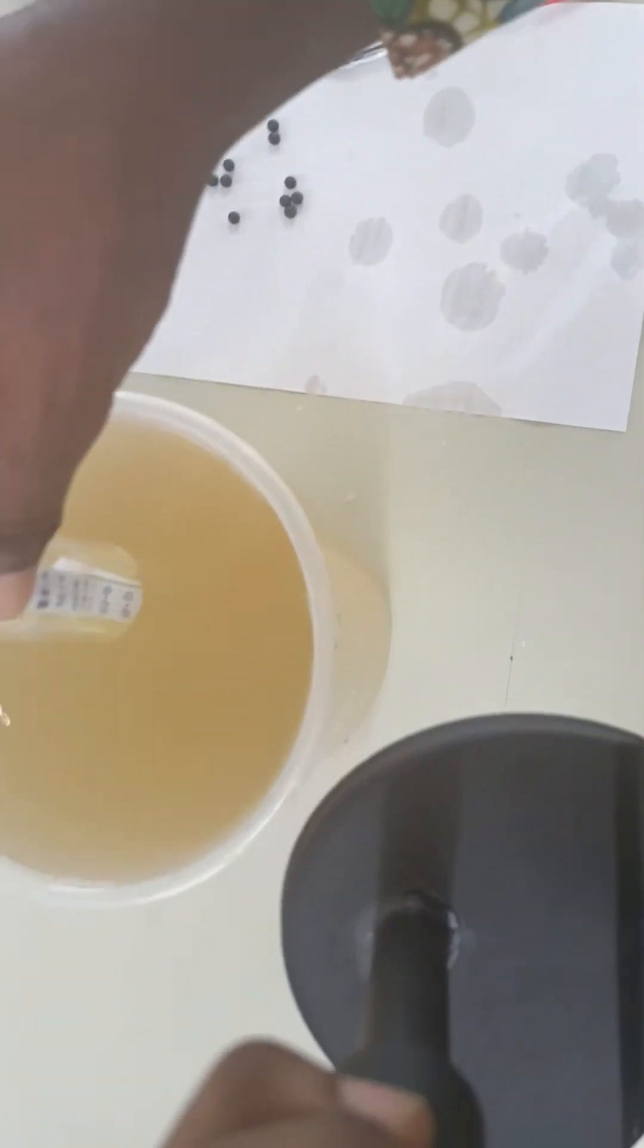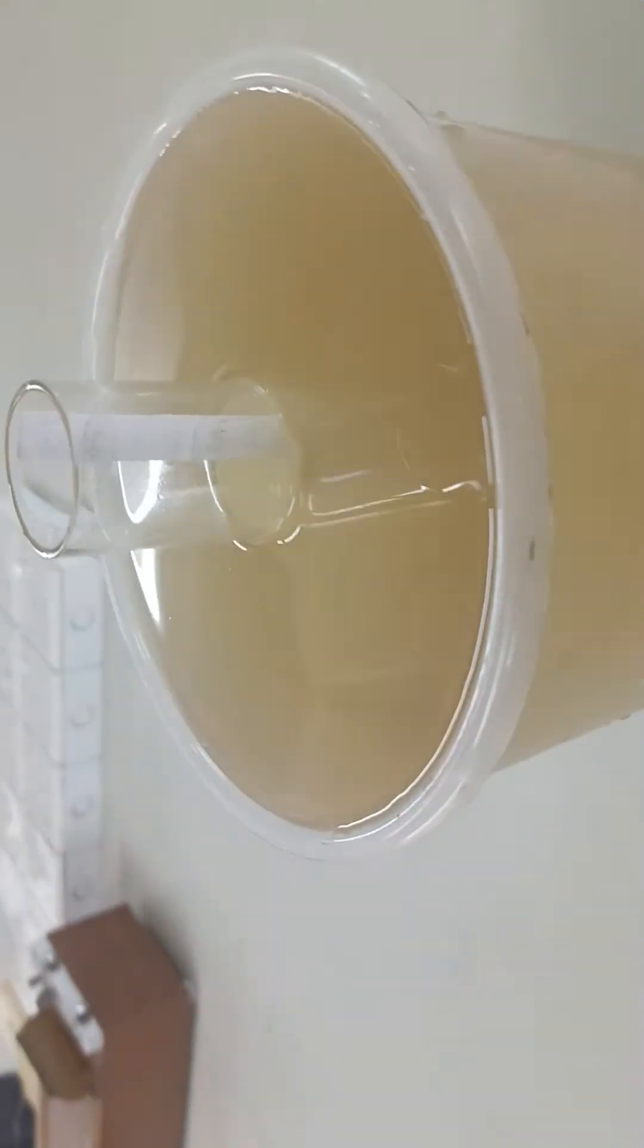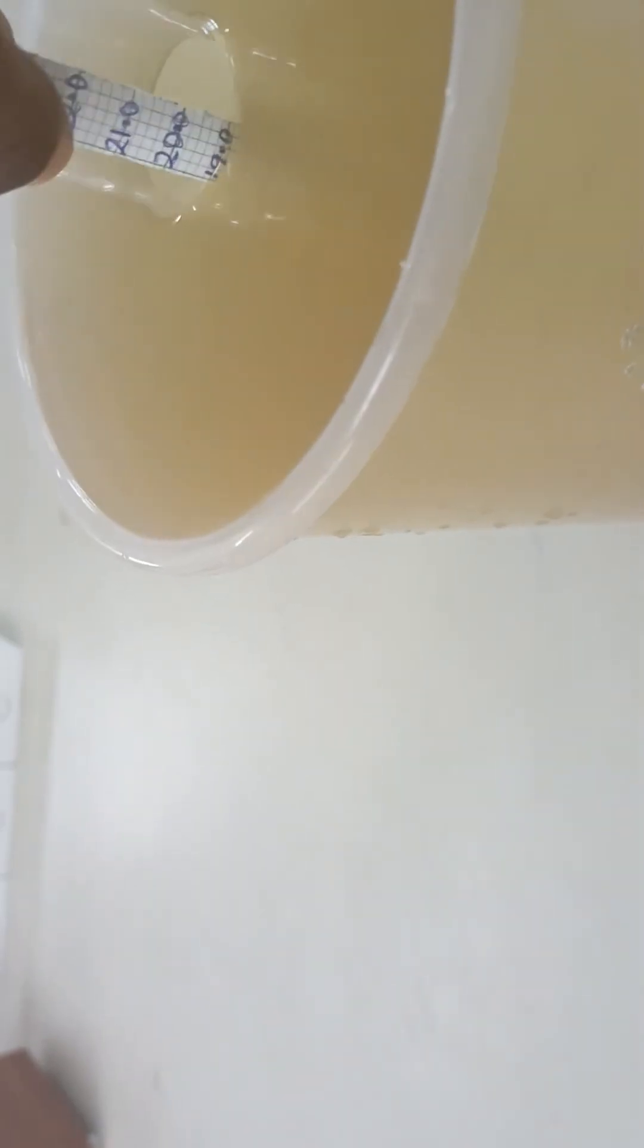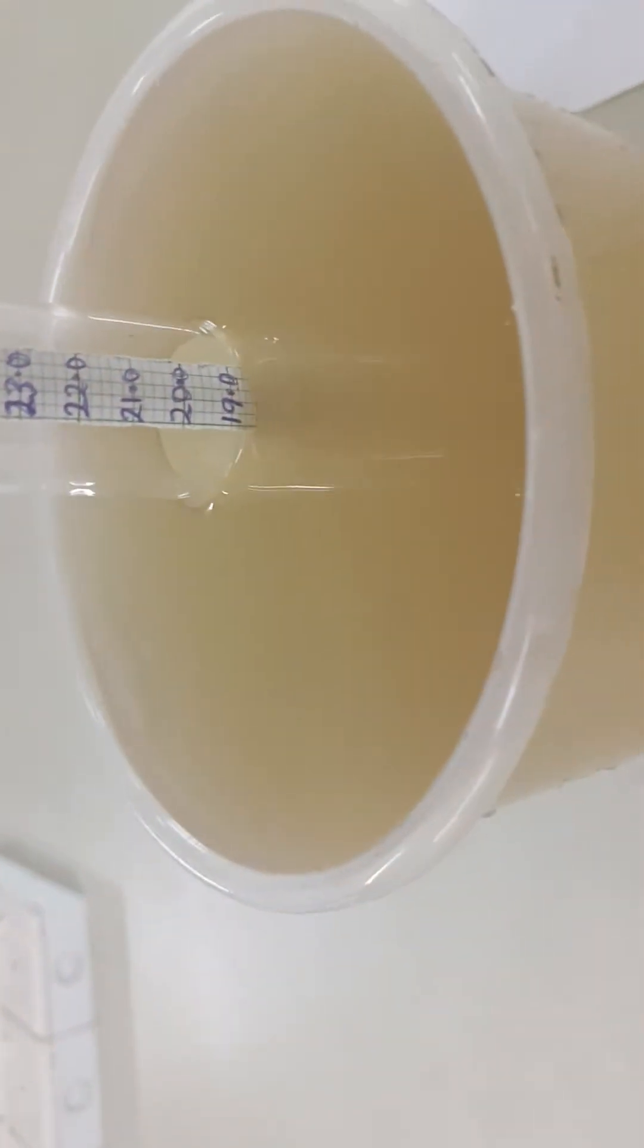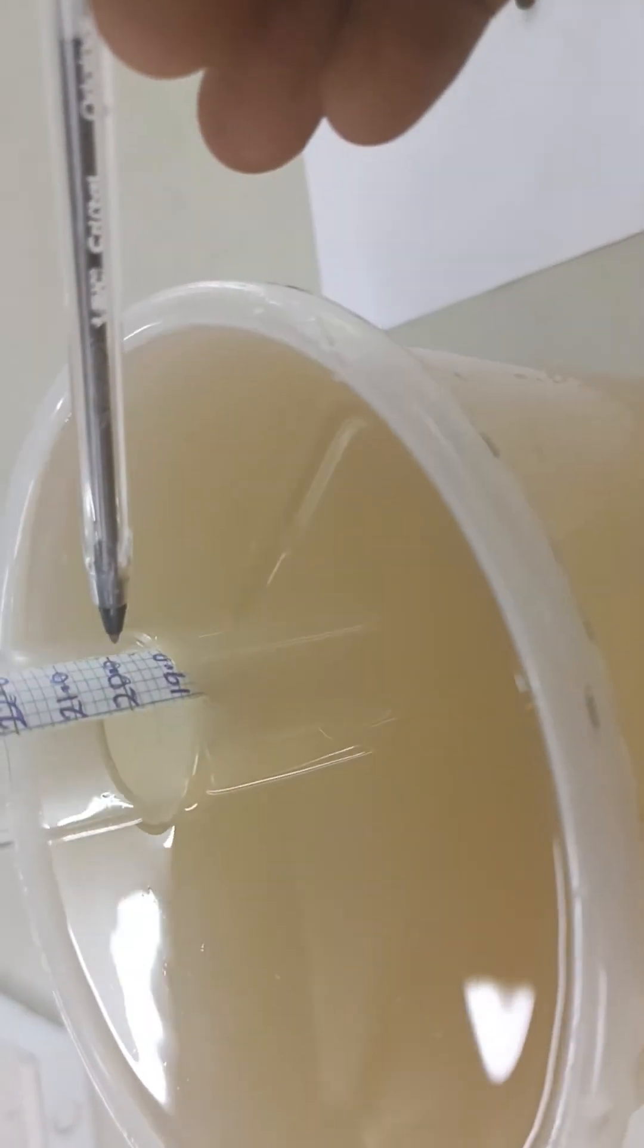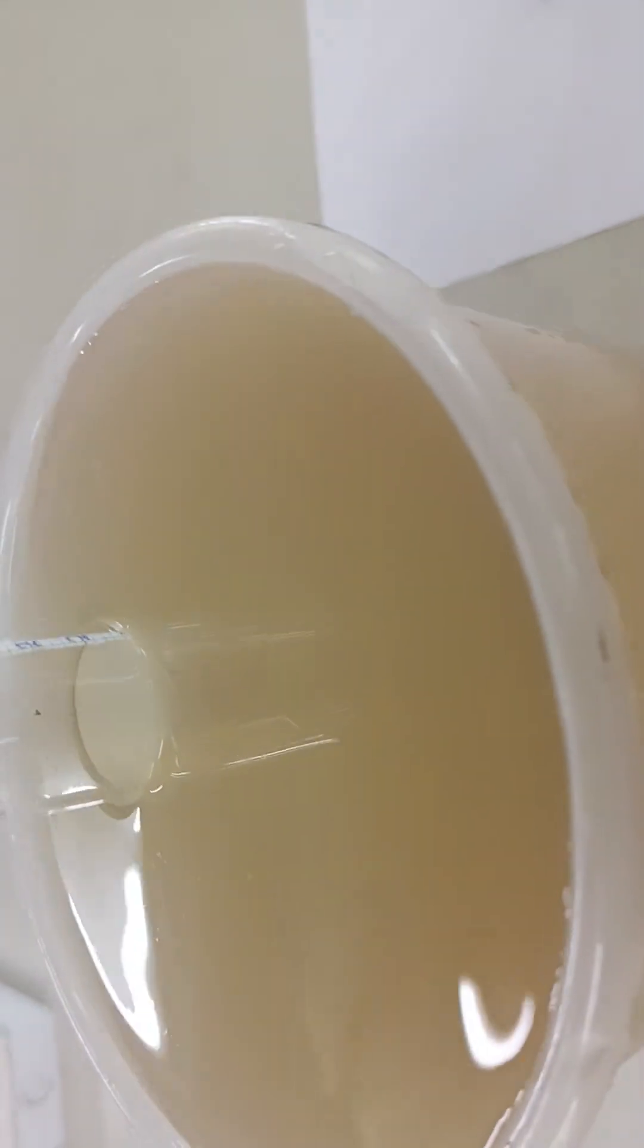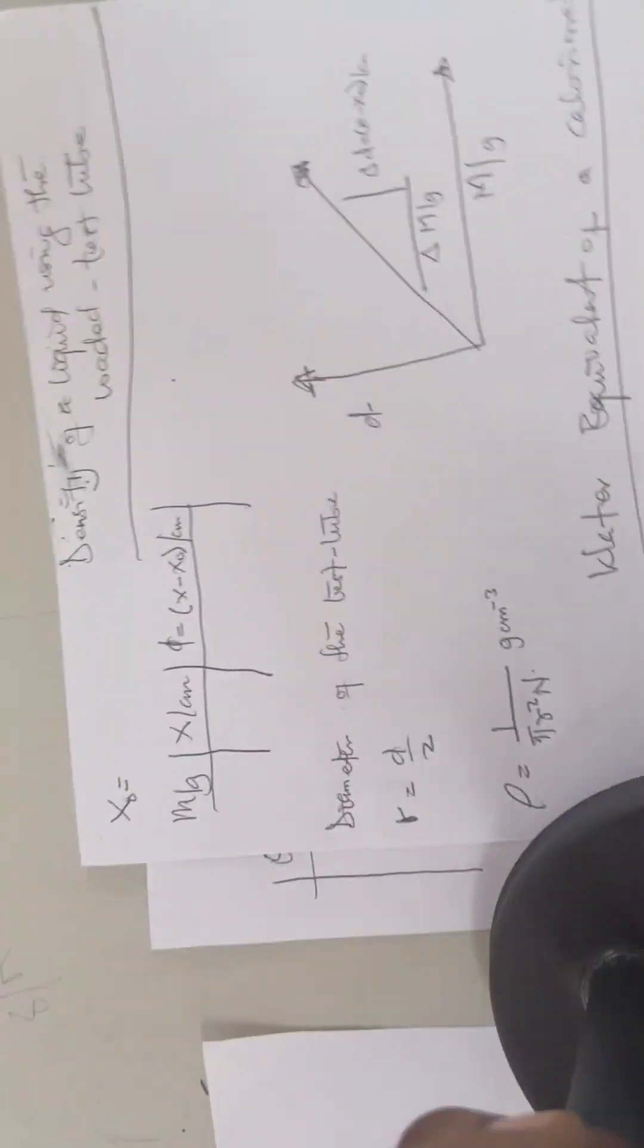We will place this in there without any mass, just the lead shot, then let it float vertically. Once this floats, then we can take this particular value as our x naught. So x naught is 19.0 cm.